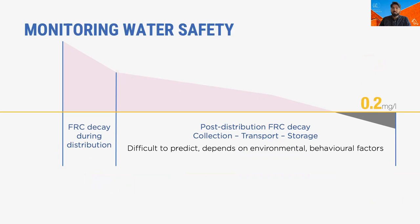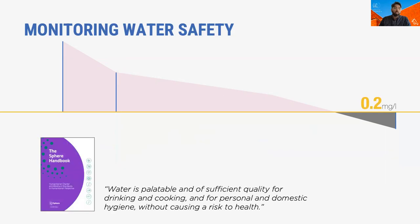And it's not just a question of adding more chlorine. A chlorine dose that's too small could lead to recontamination and create a public health risk, but too much chlorine can lead to taste and odor acceptance issues. So we're designing between two boundaries. The sphere standard for water quality requires that water is palatable and of sufficient quality for drinking and cooking and for personal and domestic hygiene without causing risks to health. Depending on the context, the margins for achieving this standard may be quite slim, so we need good models as well as monitoring tools with which to determine the effective chlorine dose.